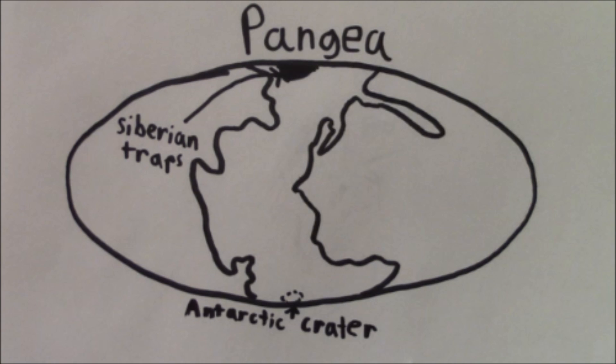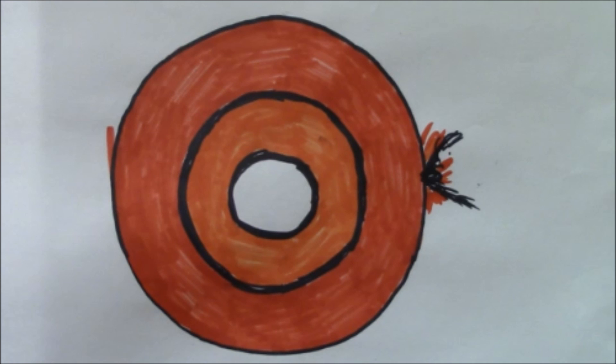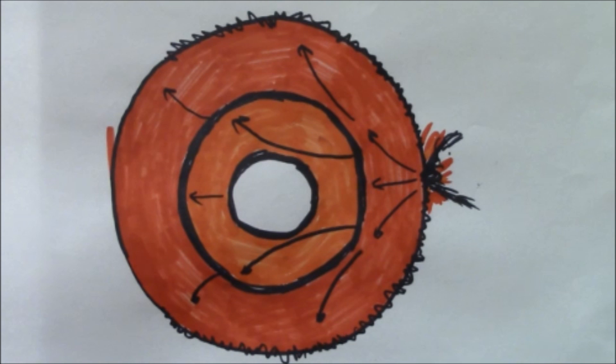This has been used by some theorists as evidence in support of a pre-existing theory that if a meteor impact is large enough, the convergence of seismic waves on the opposite side of the planet can cause intense volcanism. Basically, an asteroid punched the earth so hard that it cracked the other side of the planet.